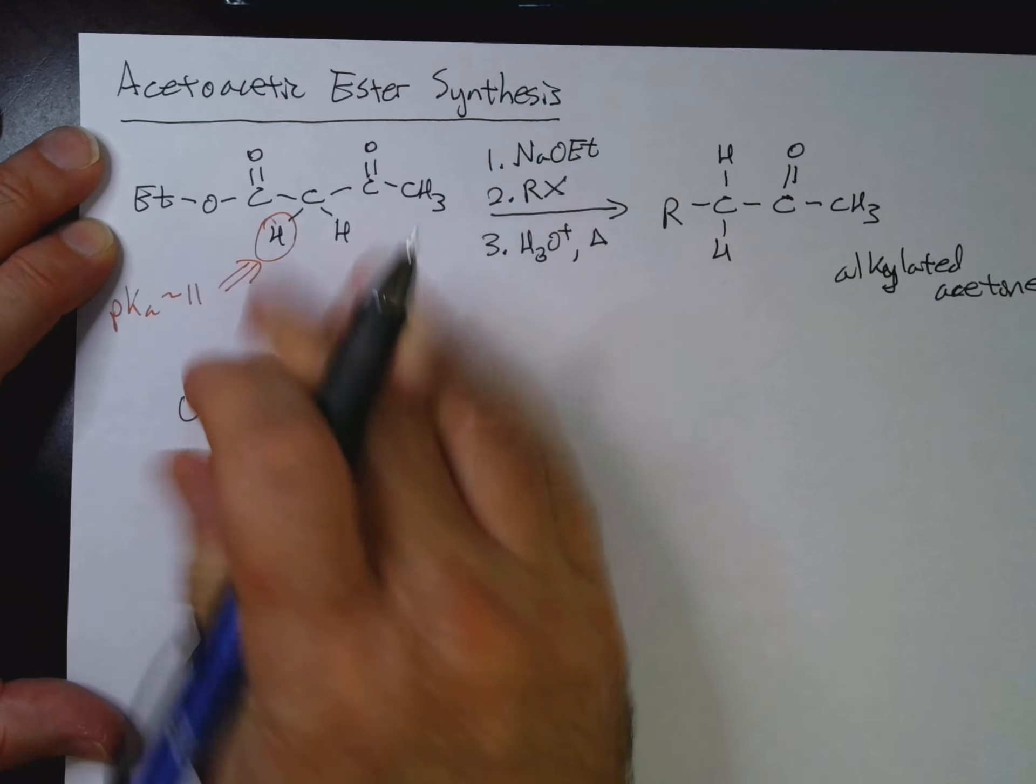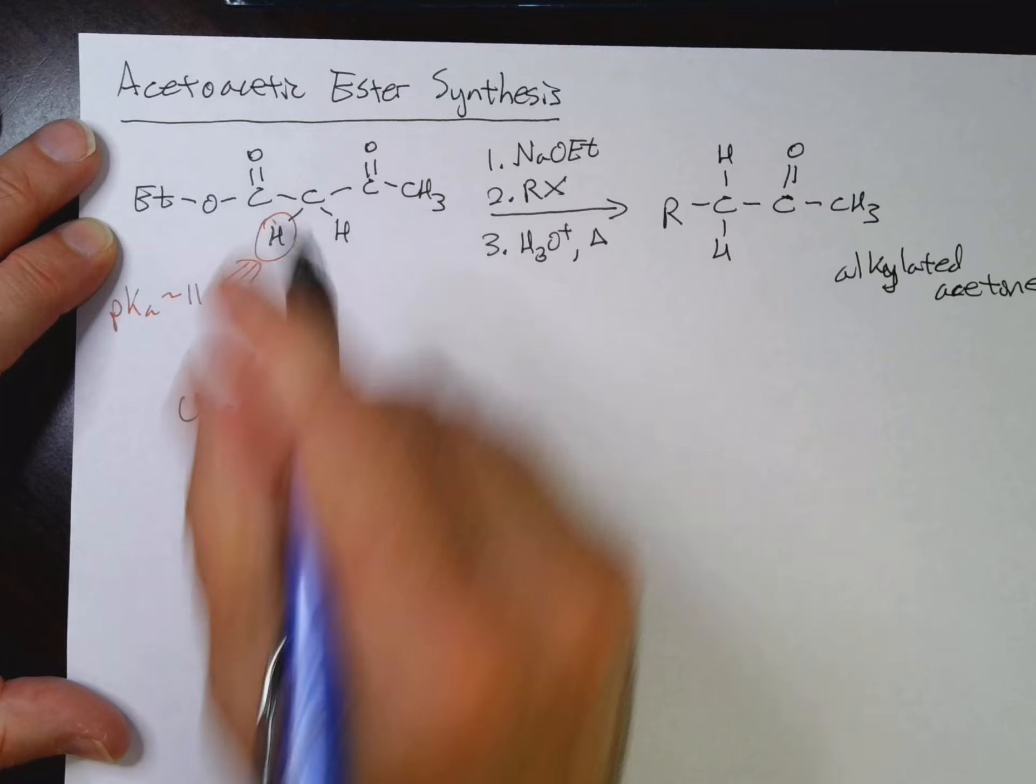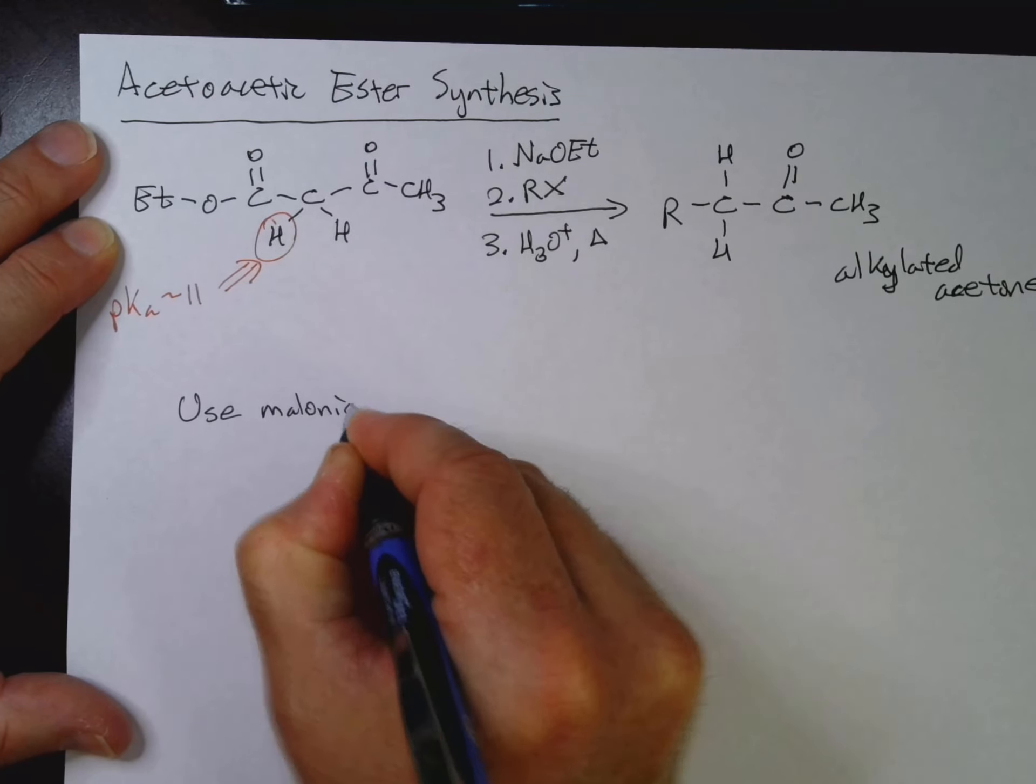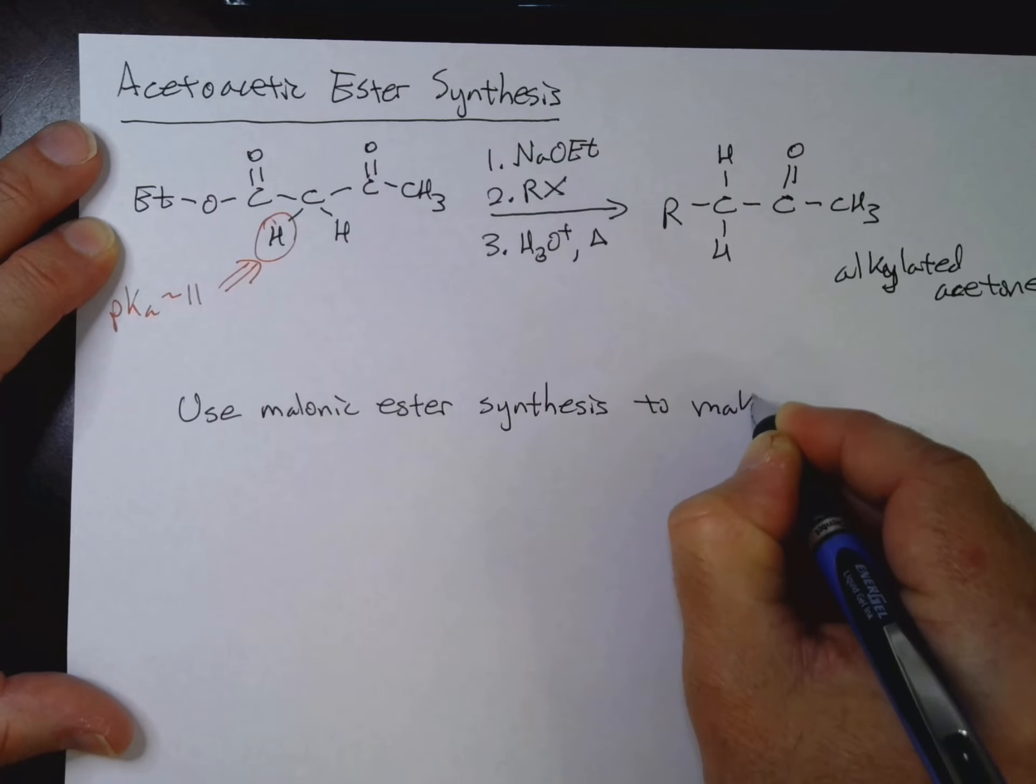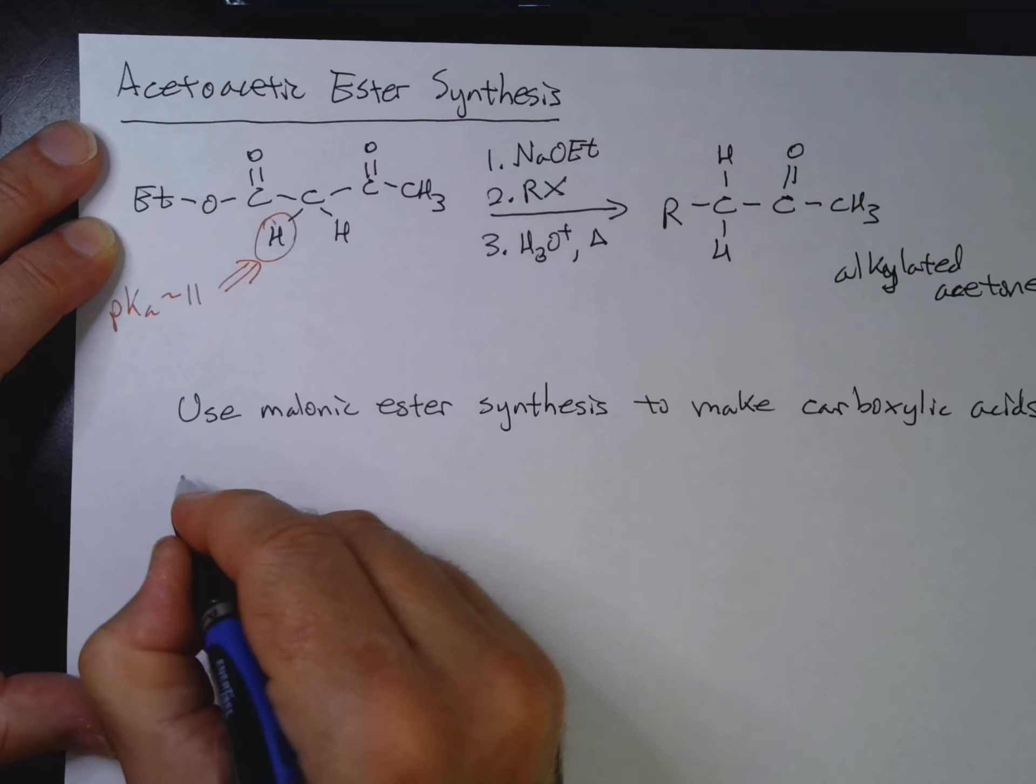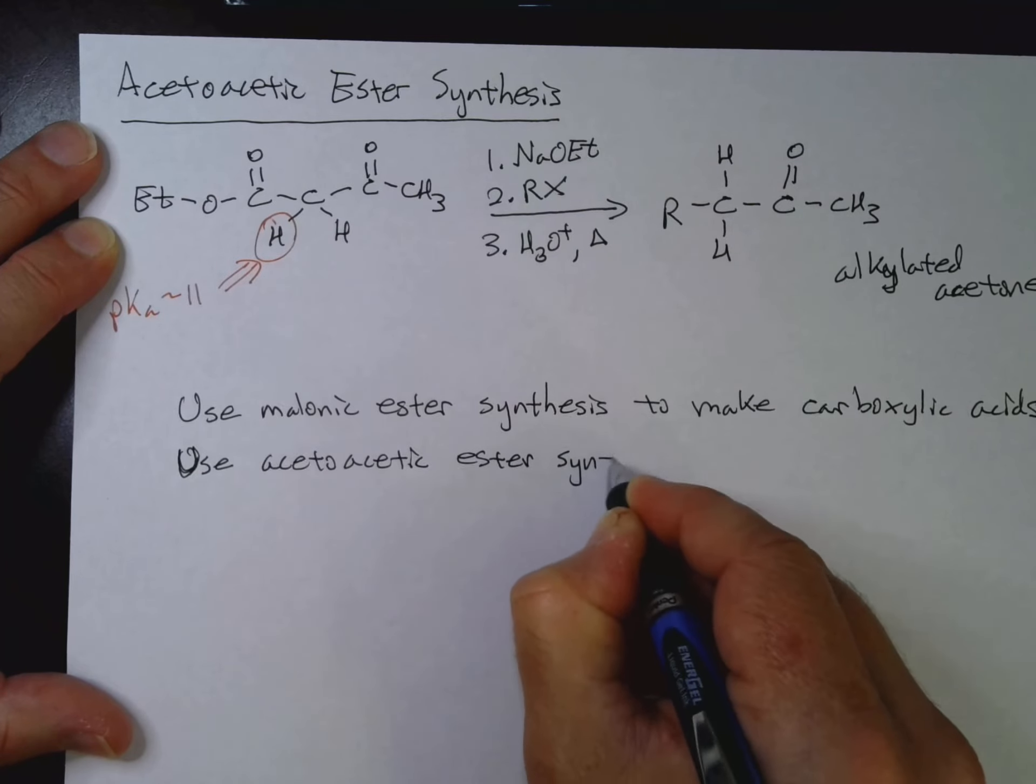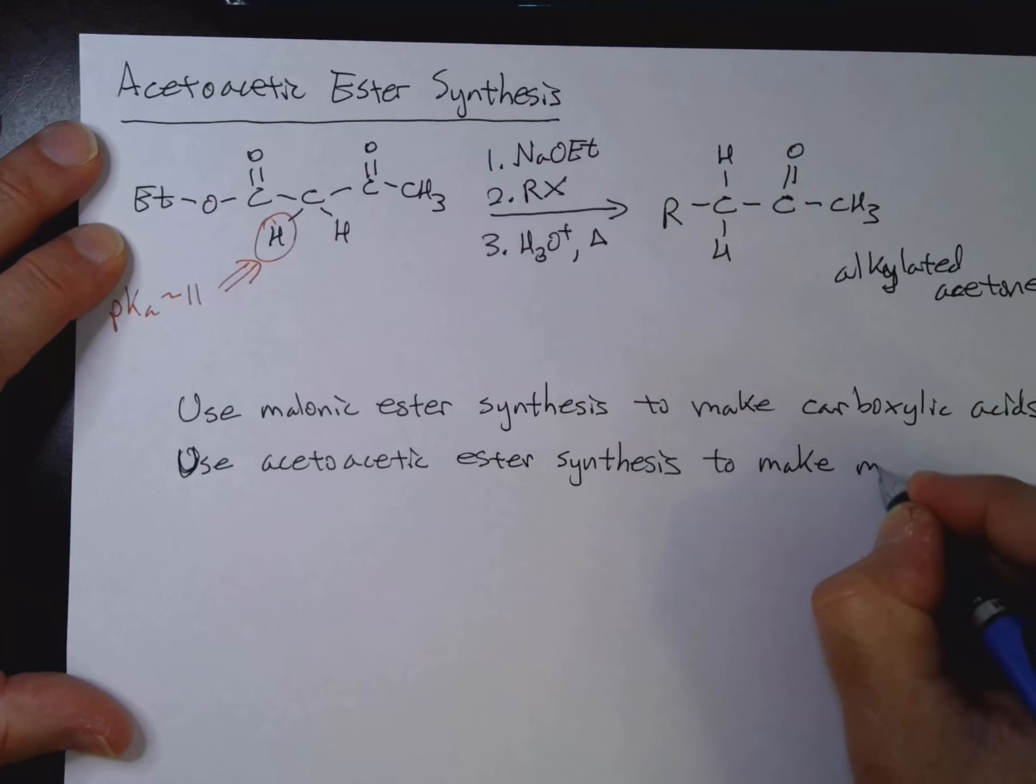So I won't do the mechanism for the acetoacetic ester synthesis. You guys can do that. It follows the same steps that the malonic ester synthesis does. So what do I want to say here? Use malonic ester synthesis to make carboxylic acids.